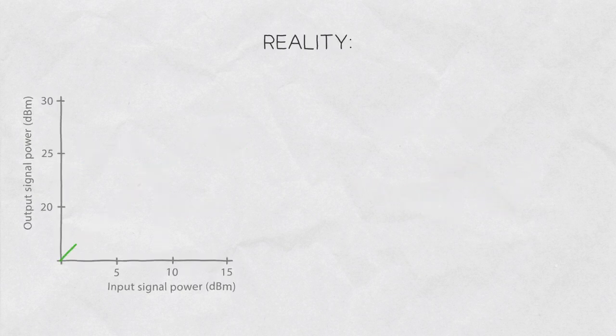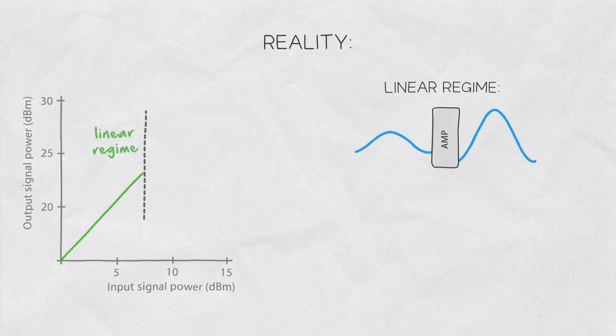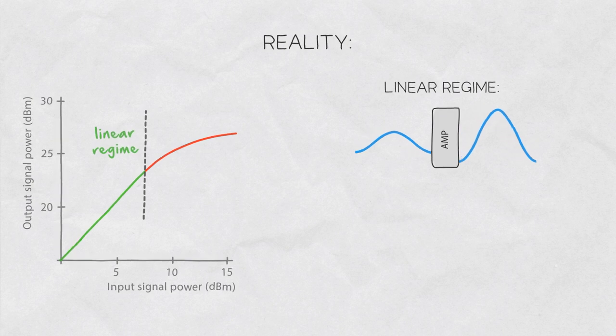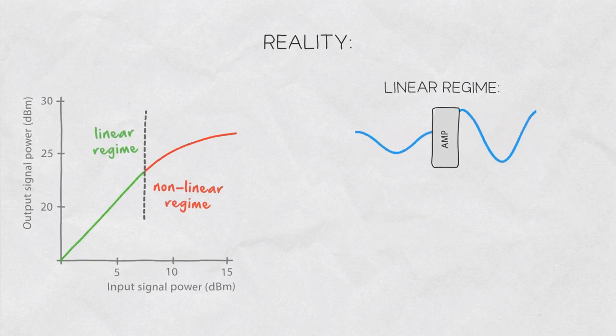In reality the amplifier is linear only for a limited span of input powers. At some point the line starts bending into a curve. Here we say that the amplifier is already in a non-linear regime.